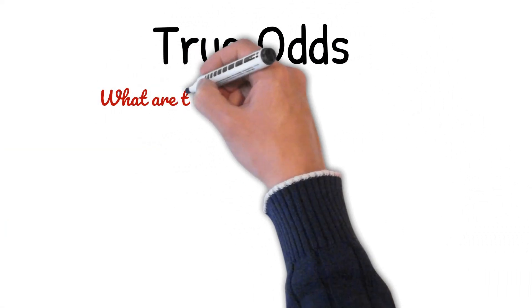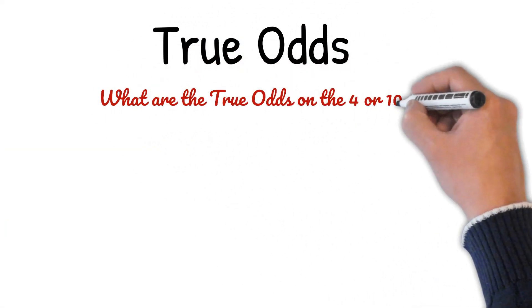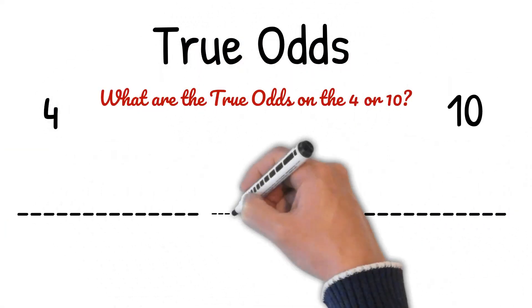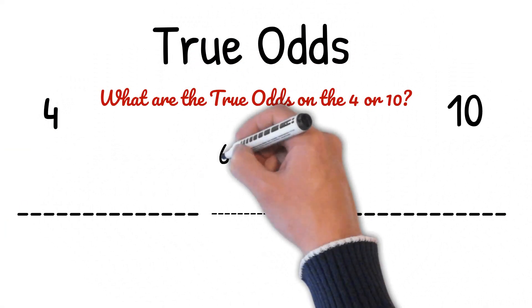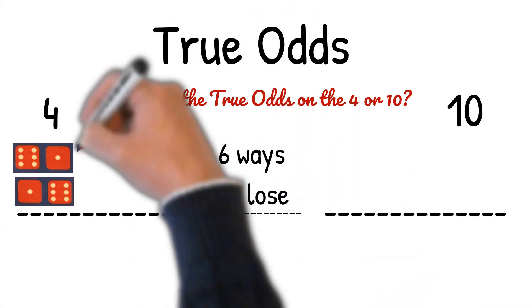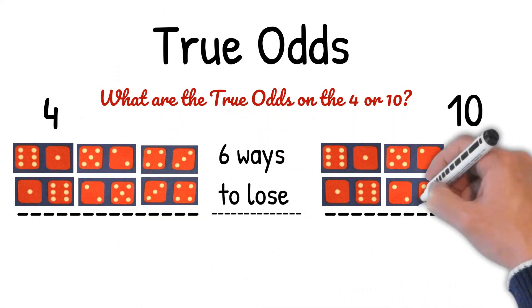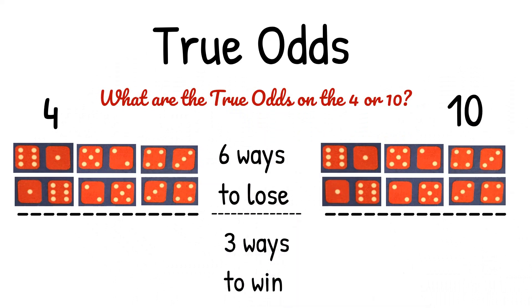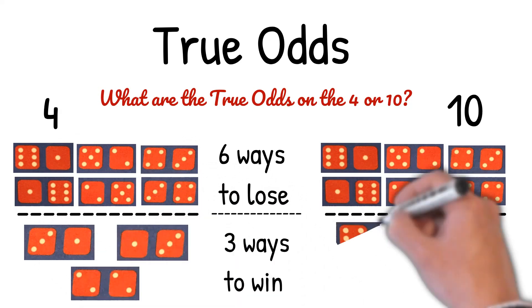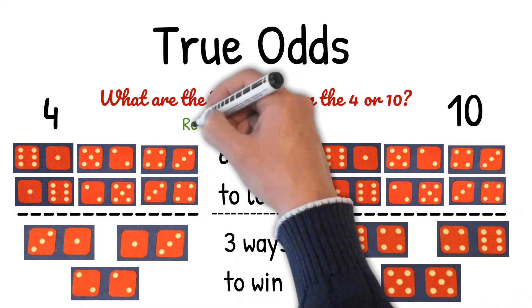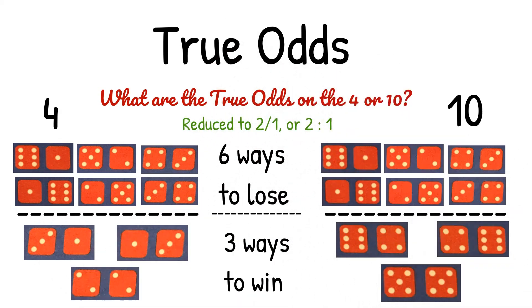What are the true odds on the 4 or 10? Six ways to lose, 3 ways to win, which reduces to 2 to 1, or 2 to 1 as a ratio.